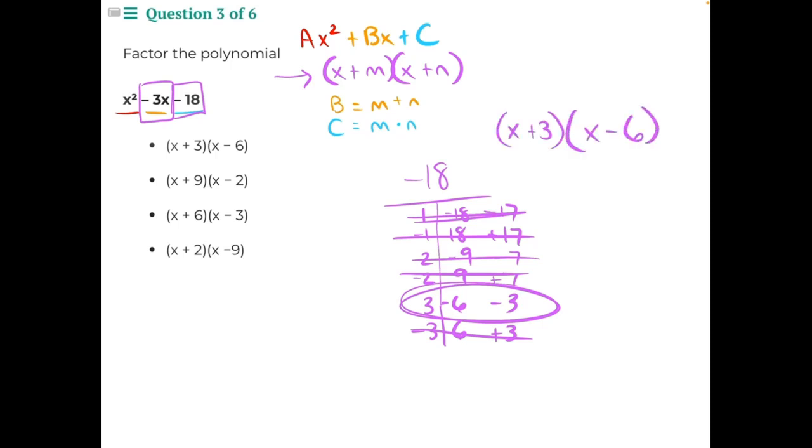And we will use distributive property and the FOIL method in order to double check our answer. If we start with the front, x times x will give us x squared. Then we move on to the outer numbers, x times negative 6 would give us negative 6x. Then the inner side, positive 3 times x would give us positive 3x.